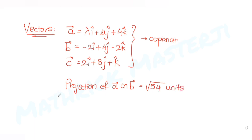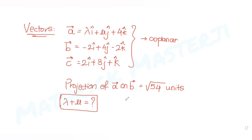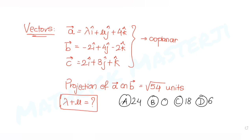The question asks us to find the sum of all possible values of λ + μ. The answer choices are 24, 0, 18, and 6. We need to figure out which one is the correct answer.